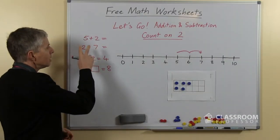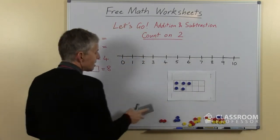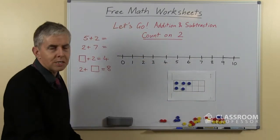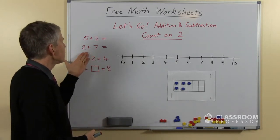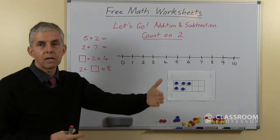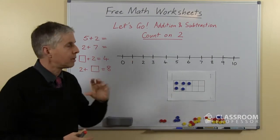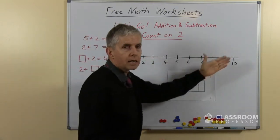With the second example, 2 plus 7, we're not going to start from the 2 and then count on 7. There is no count on 7 strategy. We will teach our students for counting on small amounts, and our recommendation is to go only up to 3, so count on 1, 2, or 3. Start with the larger number, so start from the 7, again count on 2.